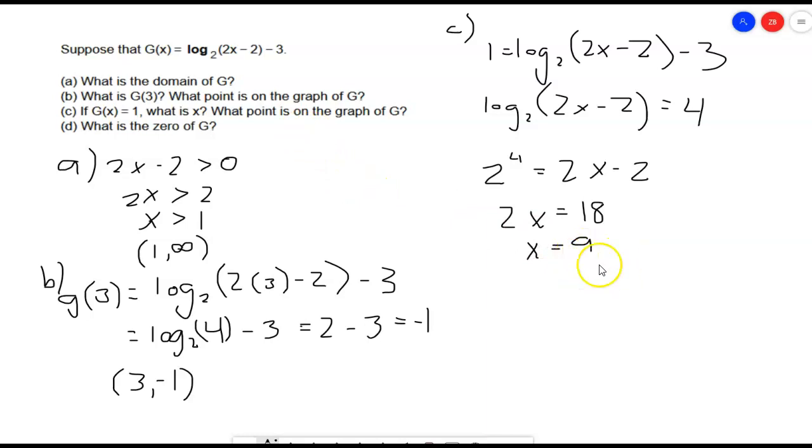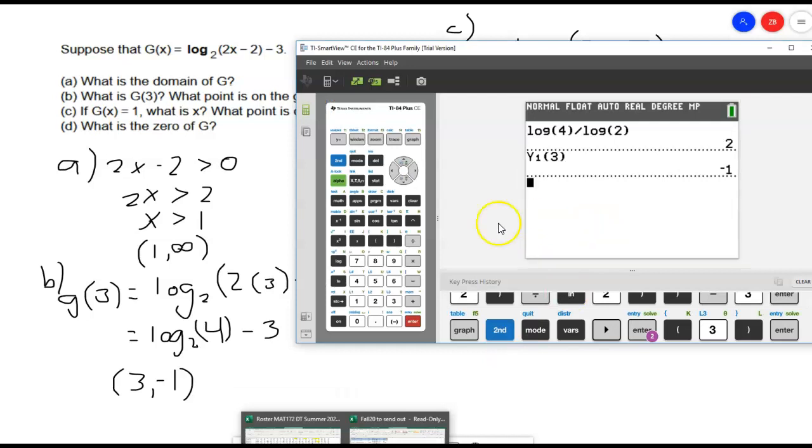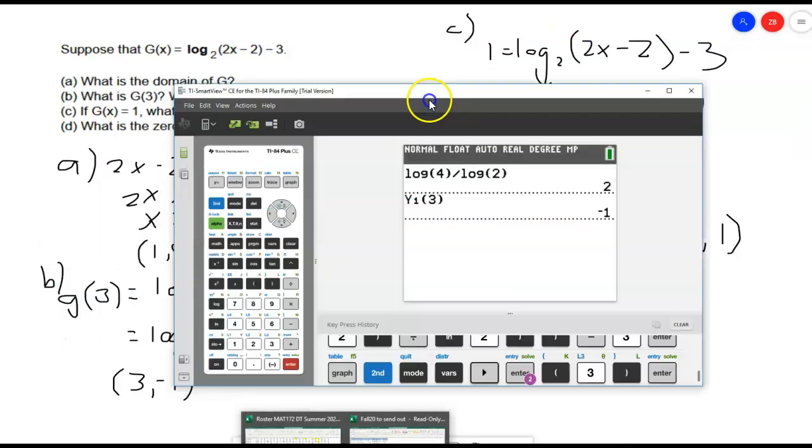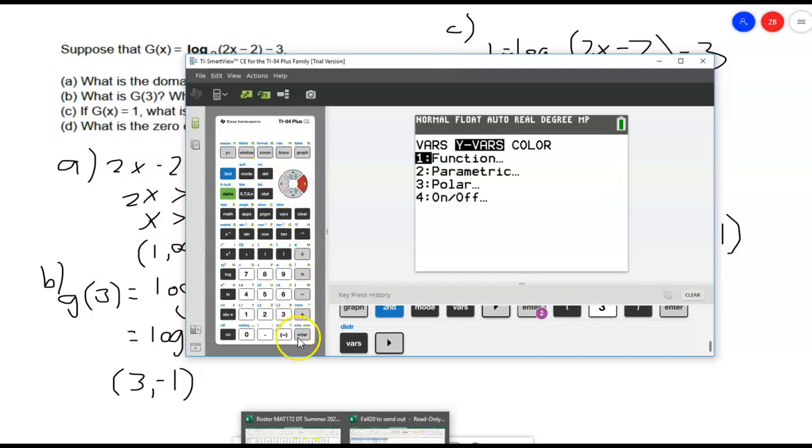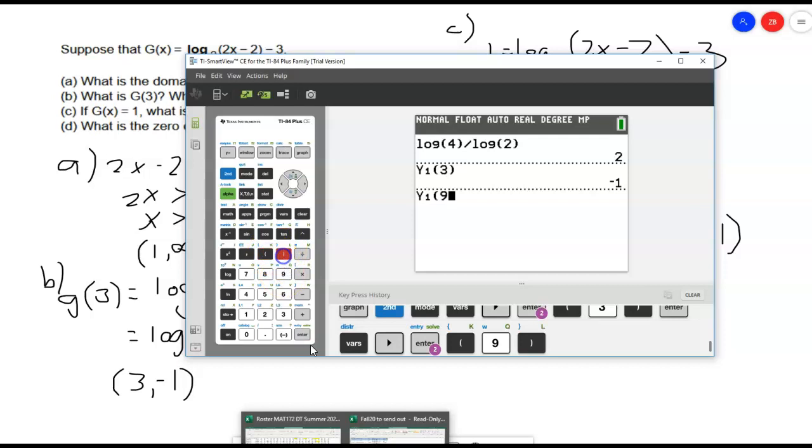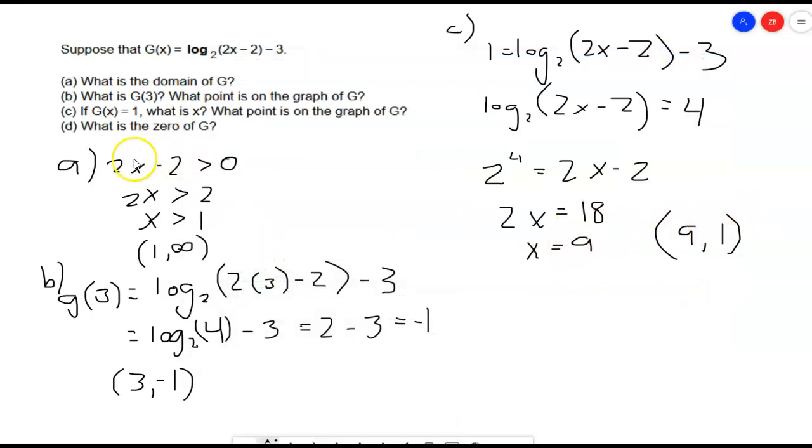All right, so that point on the graph is going to be an x value of 9 and a y value of 1. So, 9, 1. Let's go back to our calculator and make sure that makes sense. So, going back to the calculator, I'm going to put in a 9 for x and see if I get a 1 back. So, a bit of ours. Y function, y variable. I'm going to stick a 9 in there. And sure enough, we get a positive 1 back. So, that looks like it works.